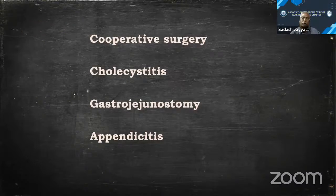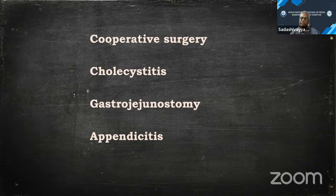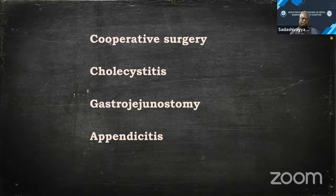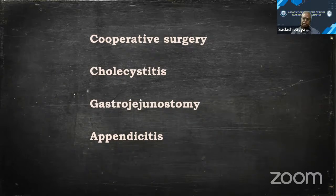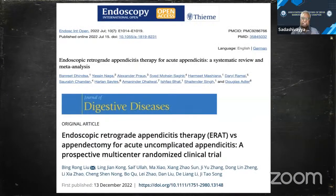Cholecystoenterostomies, choledochoenterostomies, and gastroenterostomies are now being done endoscopically. Even appendicitis is being treated endoscopically — there is a recent RCT in non-complicated appendicitis. Surgeons will stop treating these conditions too if they don't pick up endoscopic skills. We need to train our people. Early lesions of the esophagus can be seen — very early lesions which cannot be seen unless you start doing endoscopies yourself. We see many patients coming with advanced lesions; unless you do endoscopy, you can't pick them up early.